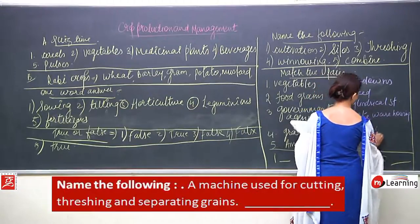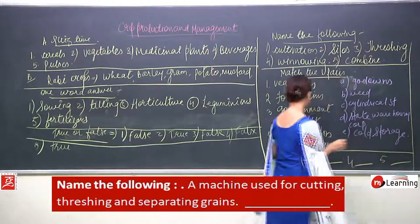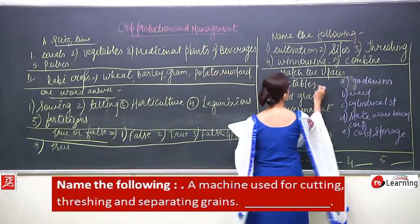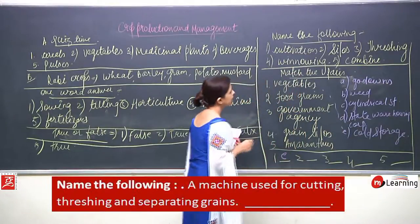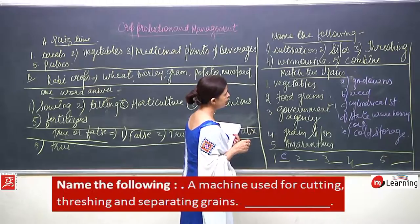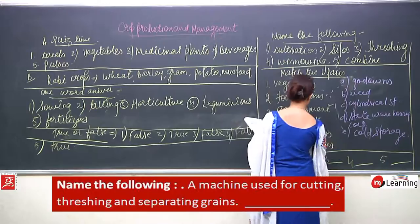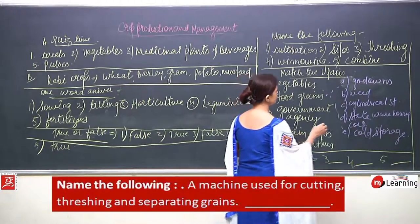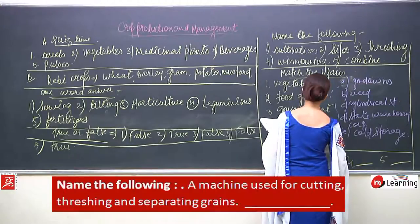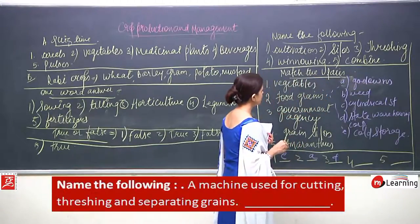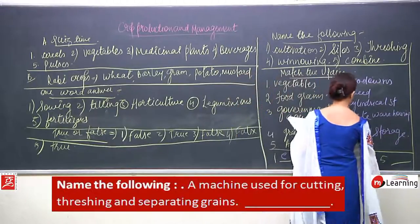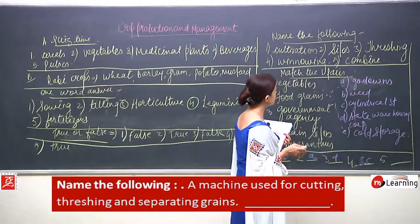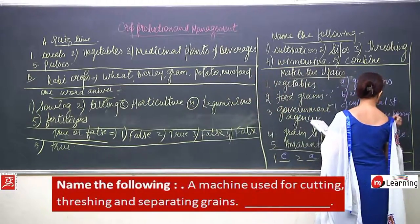So: vegetables match with cold storage (E). Food grains match with godowns (A). Government agency matches with state warehousing corporation (D). Grain silos match with cylindrical structure (C). Amaranthus is a weed (B).